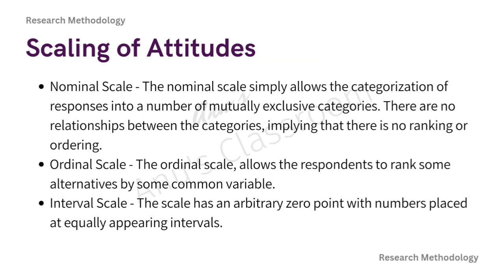So how do we scale attitudes? There are various scales available. The nominal scale allows categorization of responses into mutually exclusive categories with no ranking or order. The ordinal scale allows respondents to rank alternatives by some common variable. The interval scale has an arbitrary zero point with numbers at equally appearing intervals. Most commonly we use nominal and ordinal scales for attitude measurement, but sometimes we convert data to interval scales to make it more amenable to statistical operations.